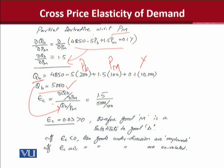We can see that Epsilon C is found to be 0.03. This is a positive value, which verifies that we are dealing with substitutes, since the effect on the quantity demanded of one good due to a price change in the other is positive. So it is proved that we are dealing with substitutes.